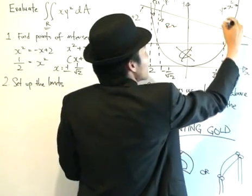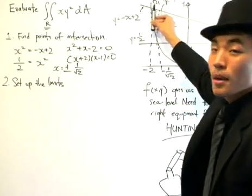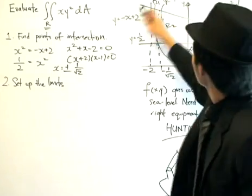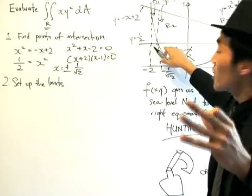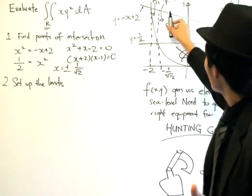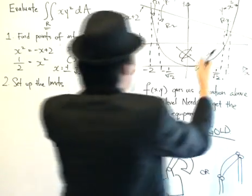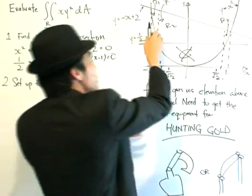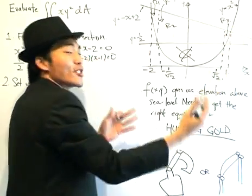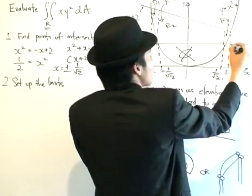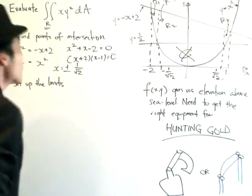This is of vital importance. If you draw a vertical line, the two y-curves are this curve and this curve. However, when you cross over the intersecting point, notice that the limits of the y-curves change. The top curve stays the same, but the bottom one changes from y equals x squared to y equals one-half. That's why we need separate regions — the curves bounding the region are not the same throughout. So let's set up the limits.